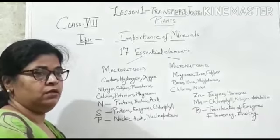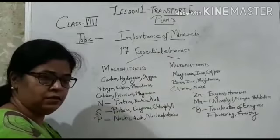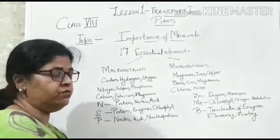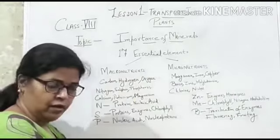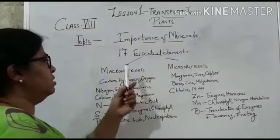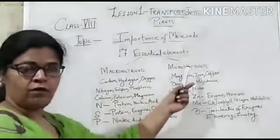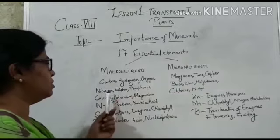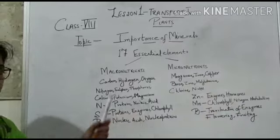The last topic of your chapter is the importance of minerals. There are 60 elements found in a plant. Out of these 60, only 17 elements are needed by plants. Out of these 17 essential elements, some are called macronutrients and others are called micronutrients. The macronutrients are carbon, hydrogen, oxygen, nitrogen, sulphur, phosphorus, calcium, potassium, and magnesium.